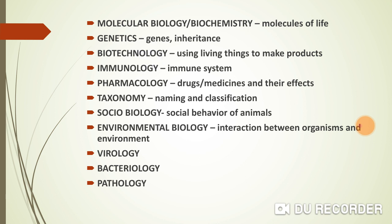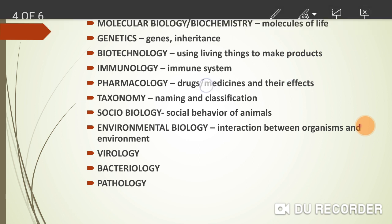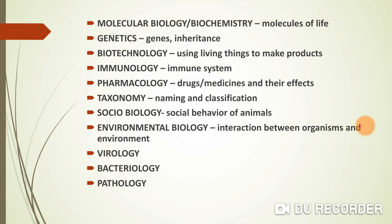Biotechnology: if we insert the insulin gene into bacteria, we can obtain insulin as a product. So using living things to make useful products is biotechnology. Immunology is the study of your immune system. As you know, there is a lot of discussion that people with a strong immune system are less harmed by the coronavirus. Pharmacology is the study of medicines, drugs, and their effects — for example, researching which medicine can effectively control coronavirus.